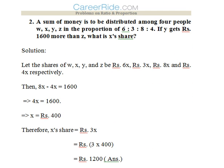Second question: A sum of money is to be distributed among four people W, X, Y, Z in the proportion 6 is to 3 is to 8 is to 4. If Y gets rupees 1600 more than Z, what is X's share?